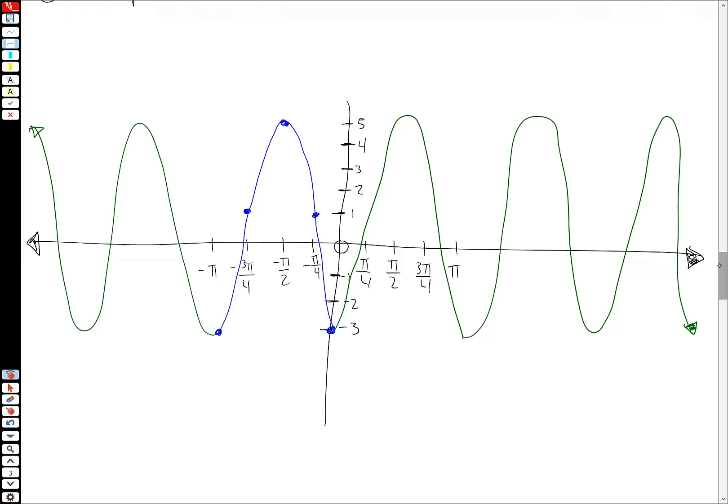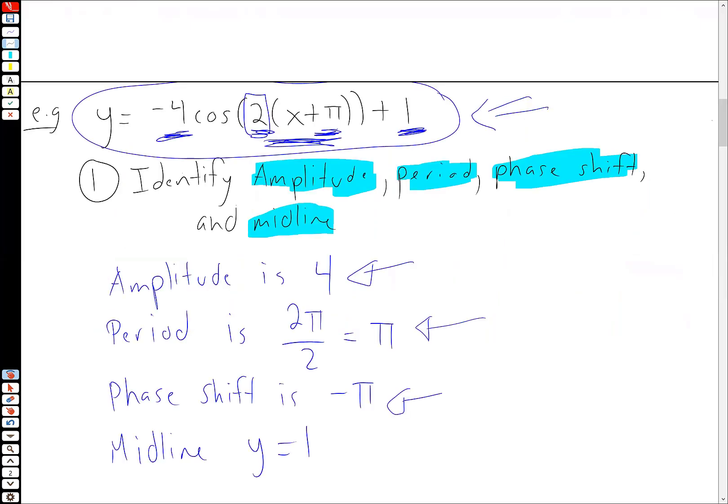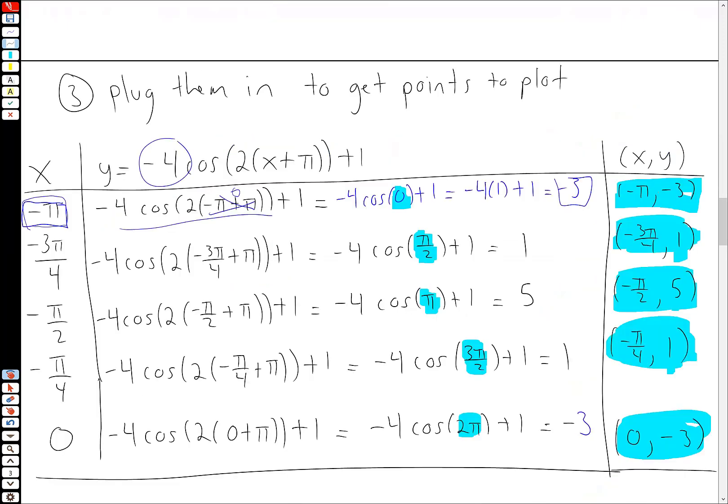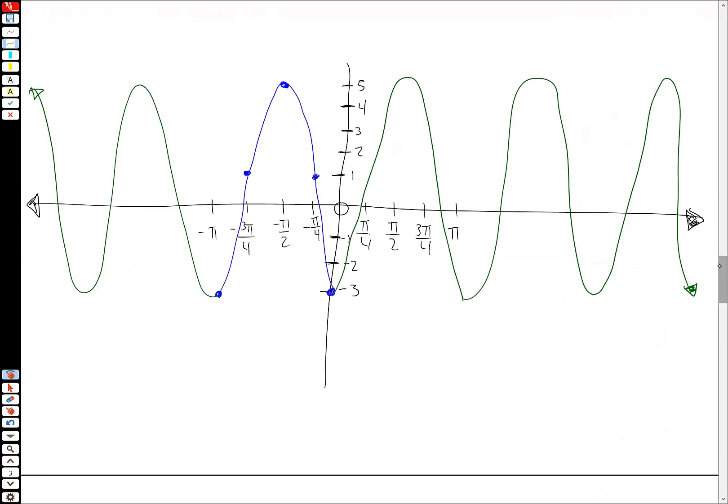And this is the process for graphing a general trig function. Again, just to outline. First, I recommend put your detective caps on, identify amplitude, period, phase shift, and midline. Two, find your new key angles by setting the old key angles equal to the inside of your trig function and solving for x. Plug in your new key angles to get nice points to graph. Graph one picture, one pattern, and then copy and paste.